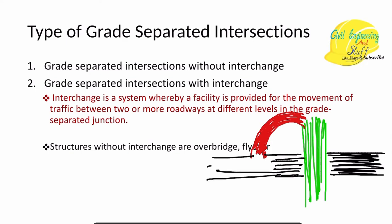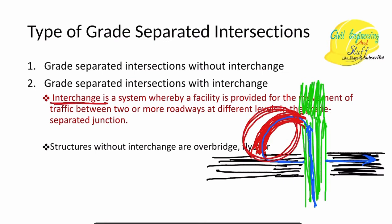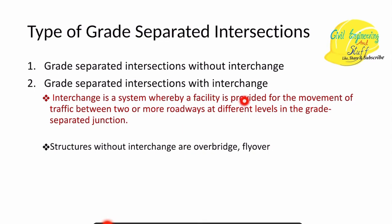This facility, which connects two different roads at different elevations and allows traffic moving at higher elevation to move to the road at lower elevation and vice versa, is what we call the interchange. So if this facility is available, it is called a grade separated intersection with interchange; if not, it is called a grade separated intersection without interchange.